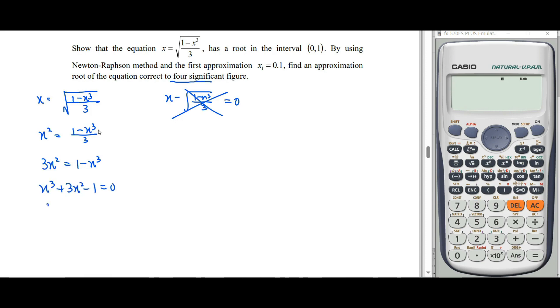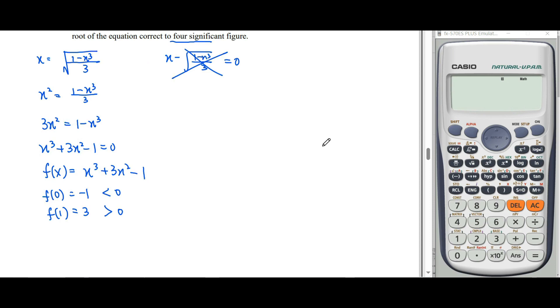This is our convergent function in polynomial form. Using algebraic method, we have to show there is a root in the interval (0,1). We substitute 0 and get -1. When we substitute 1 into the function, we get 3. Since f(0) = -1 < 0 and f(1) = 3 > 0.